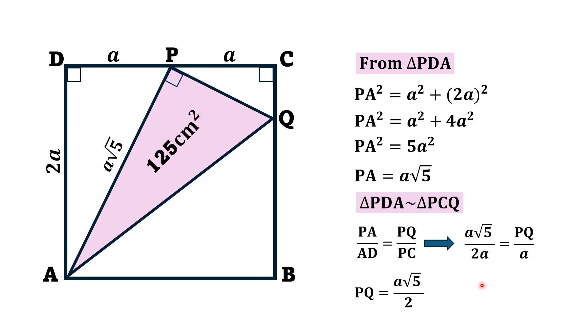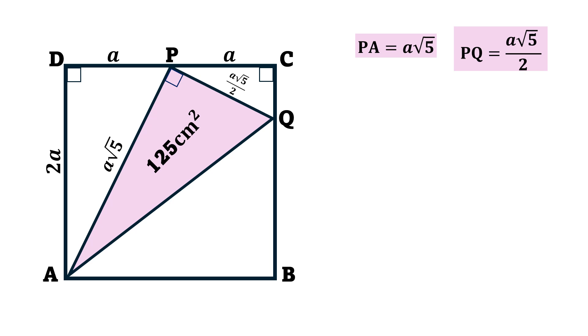Now, we have this side, PQ is a square root of 5 over 2. Area of the right triangle is equal to half times base into height. If we substitute the value of PQ, which is a square root of 5 by 2, and PA is a square root of 5, if we simplify this,